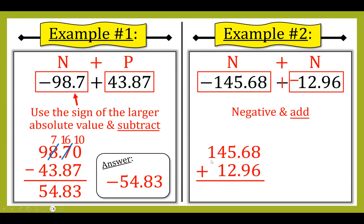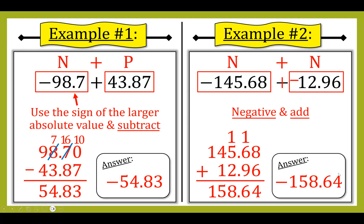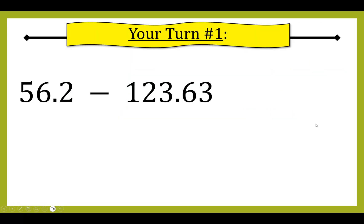I line up the two numbers: 145.68 plus 12.96. Eight plus six is fourteen, one plus six plus nine is sixteen, one plus five plus two is eight, four plus one is five, and one plus zero is one. I bring down my decimal and get 158.64. Since a negative plus a negative equals negative, my answer is negative 158.64.